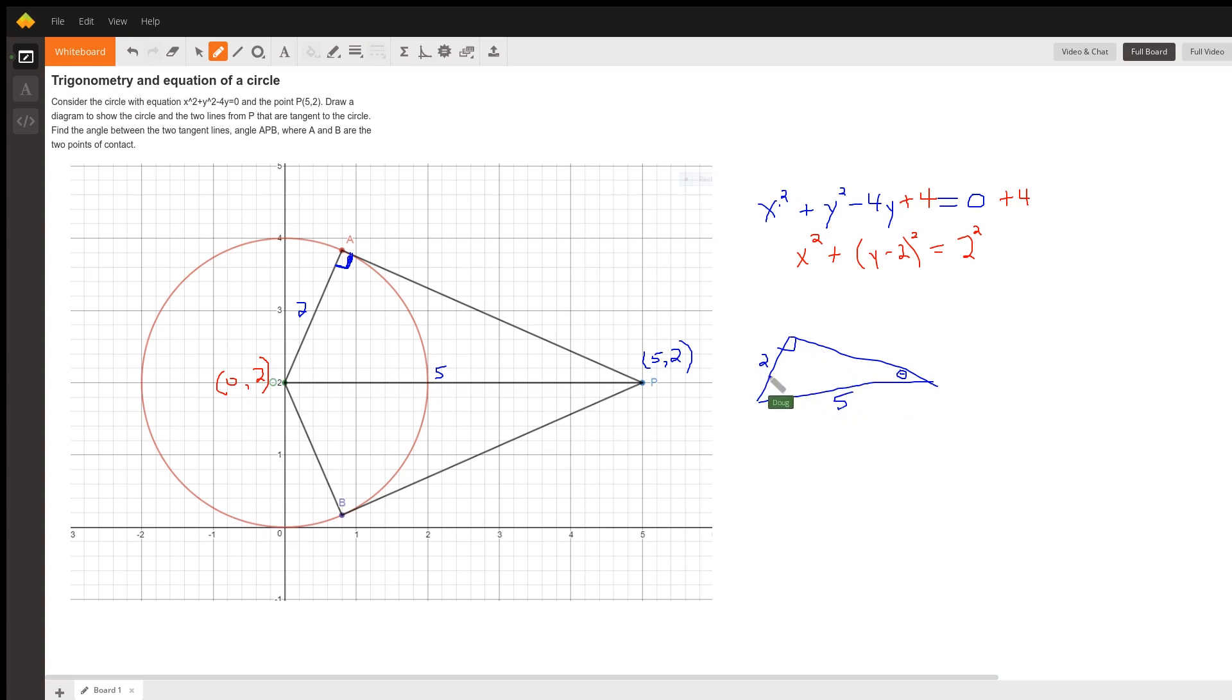So θ is the inverse sine, or arcsine, of 2/5.